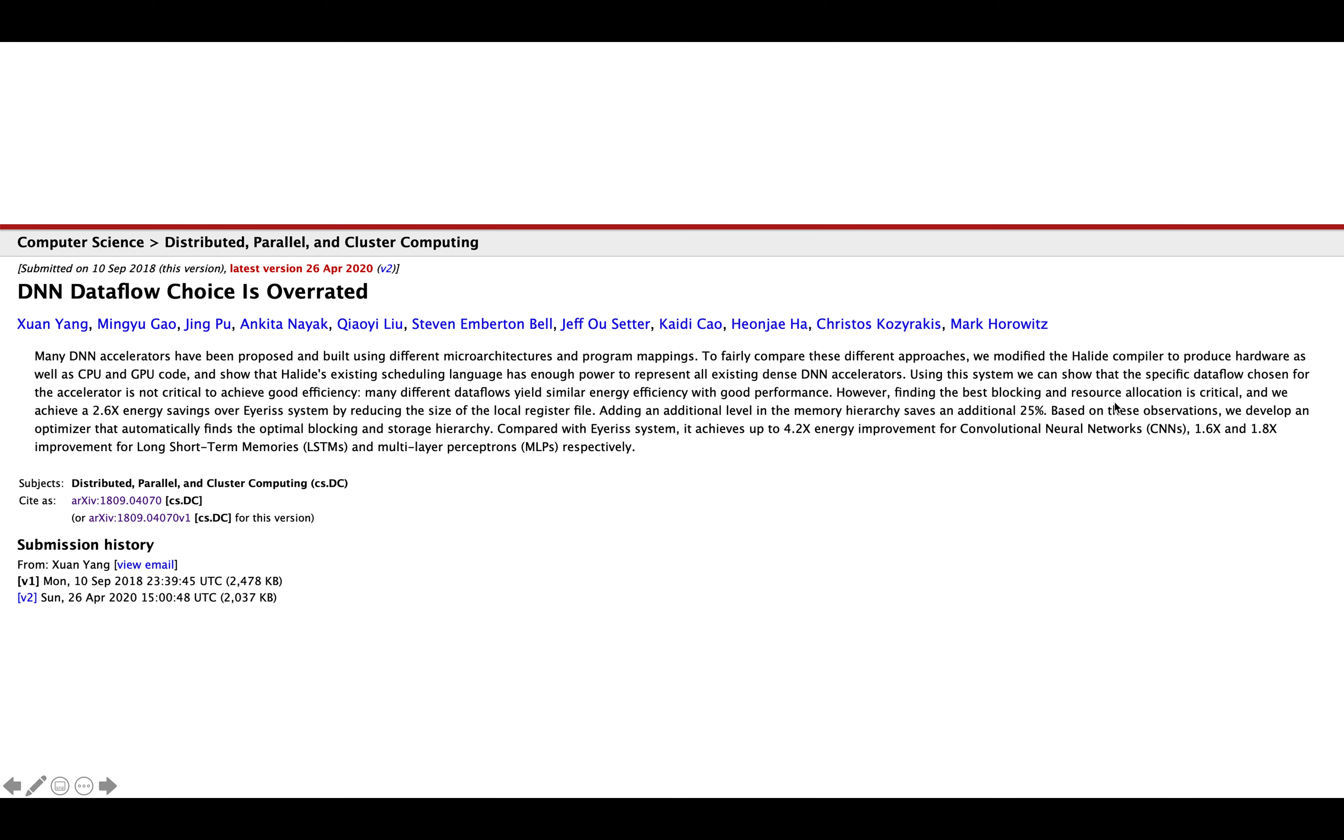Many different data flows yield similar energy efficiency with good performance. However, finding the best blocking and resource allocation is critical. And we achieve a 2.6x energy savings over Eyeriss, the aforementioned paper, by reducing the size of the local register file.